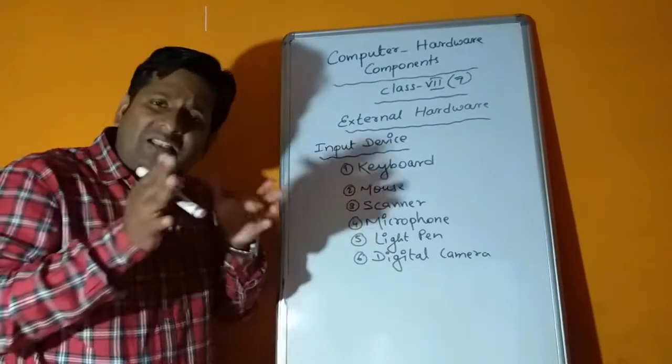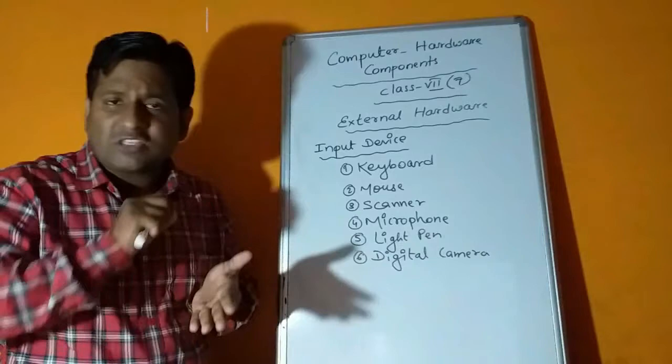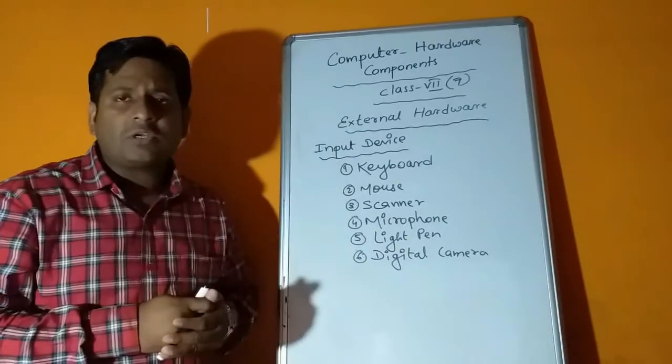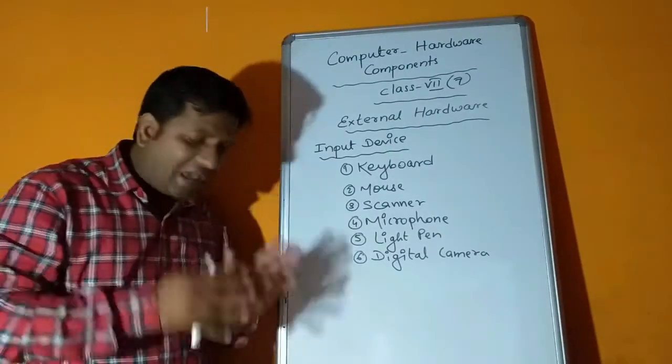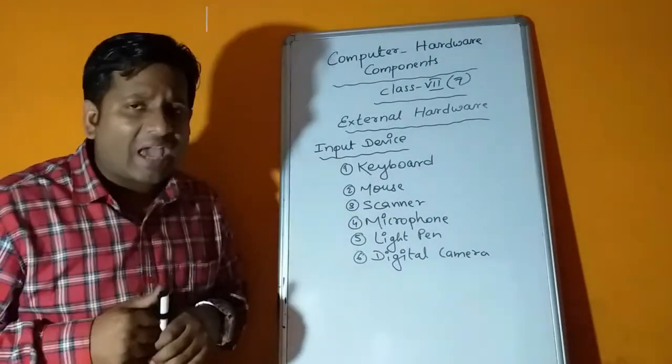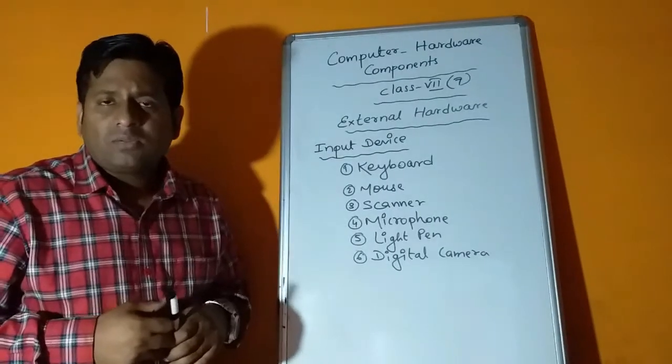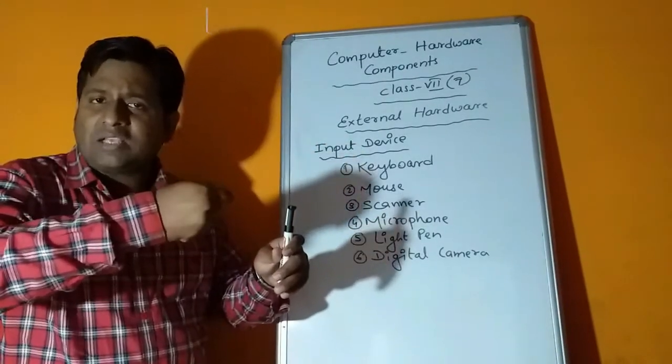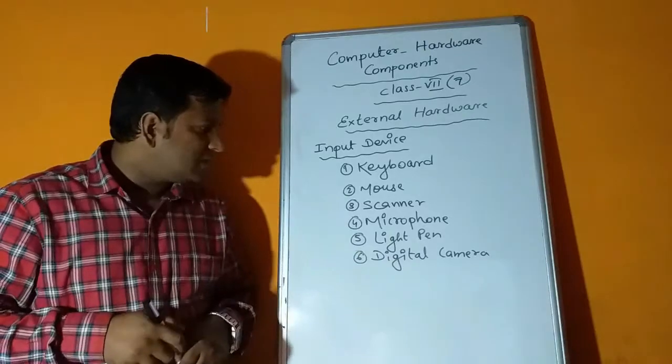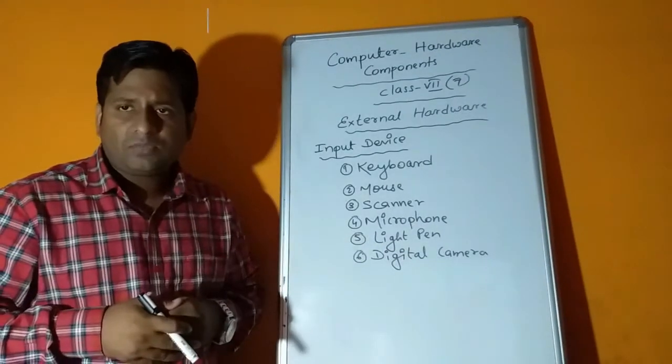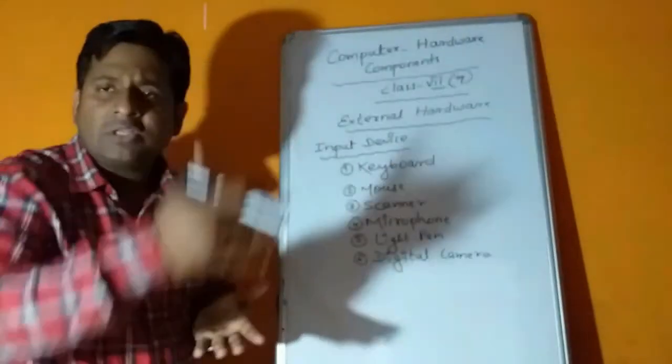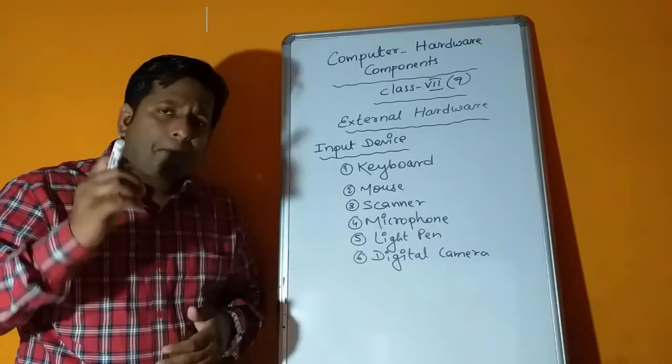After mouse, the next is scanner. Scanner is used to scan or send images or text which is in paper or written form or still images that we can send to the computer with the help of scanner. Scanner is of two types: one is handheld scanner like barcode scanners in shopping malls where they click on objects and prices are stored on computer. Second type is flatbed scanner, bigger in size where you can scan papers.